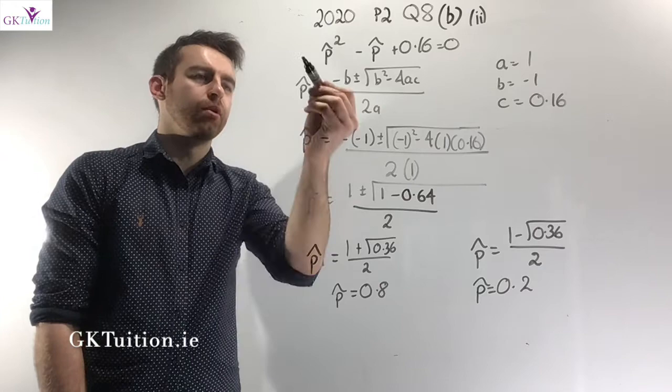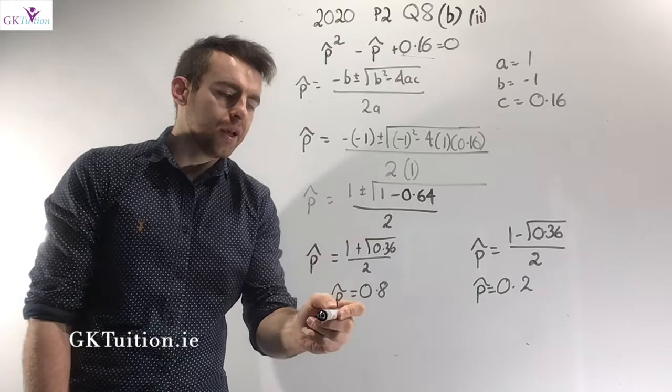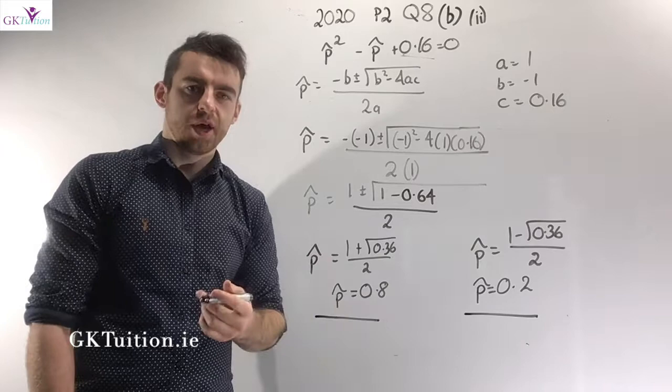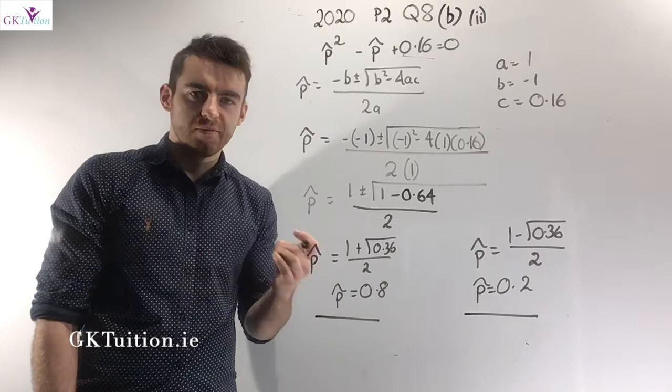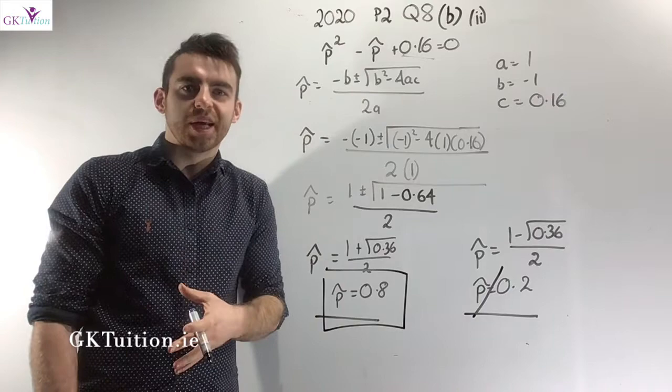Using the quadratic formula, with coefficient of p-hat² = 1, coefficient of p-hat = −1, and constant = 0.16, the two possible values are p-hat = 0.8 or p-hat = 0.2. Since the question states p-hat > 0.5, we cannot include 0.2. Therefore the proportion of people who said they would use this new service is 0.8, or 80%.